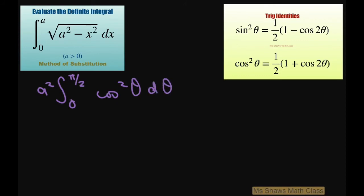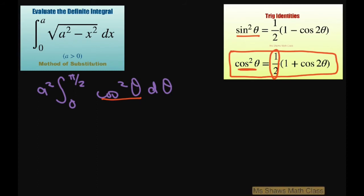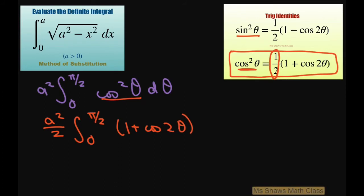So we have A squared times the integral from zero to pi divided by two of cosine squared of theta D theta. When you have cosine squared or sine squared in integration, you want to use the half-angle identity. Pulling out one half, this becomes A squared divided by two, times the integral from zero to pi over two of one plus cosine of two theta, D theta.